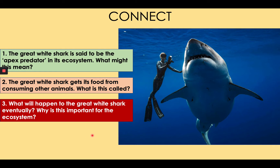Number one: the great white shark is said to be the apex predator in its ecosystem — what do you think this might mean? If you considered it, you may have seen that the great white shark is a very large, terrifying creature with a huge mouth and teeth that doesn't seem to fear anything. The apex predator in an ecosystem is one that has no natural predators. It isn't eaten by anything — it's the top of the food chain.